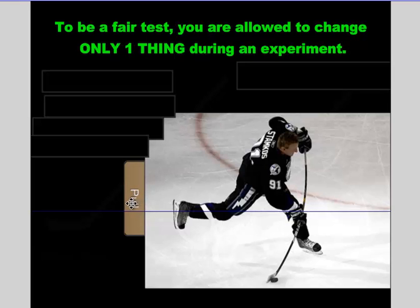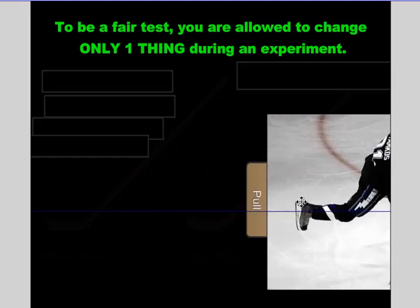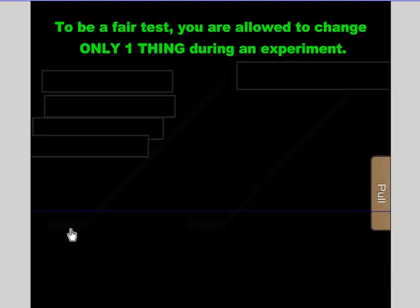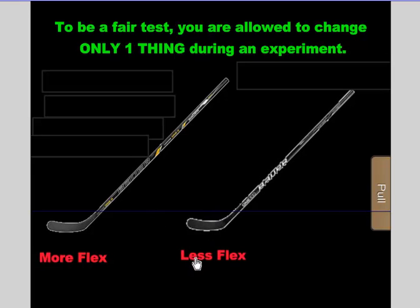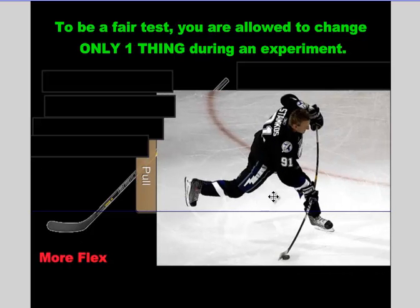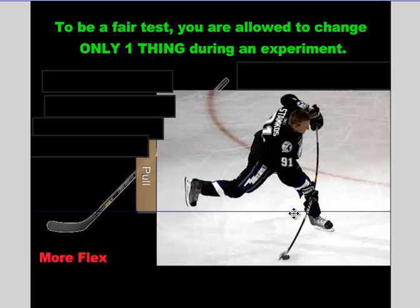Now we've got to figure out here — let's think about this as a problem. What's going to shoot the puck harder? Stick A, where there's more flex — more bend — or stick B that has less flex, less bend? I'm going to take these and test them out to figure out the answer. So I start with a problem. Look at that flex — that's going to shoot the puck harder? I've got to find out.